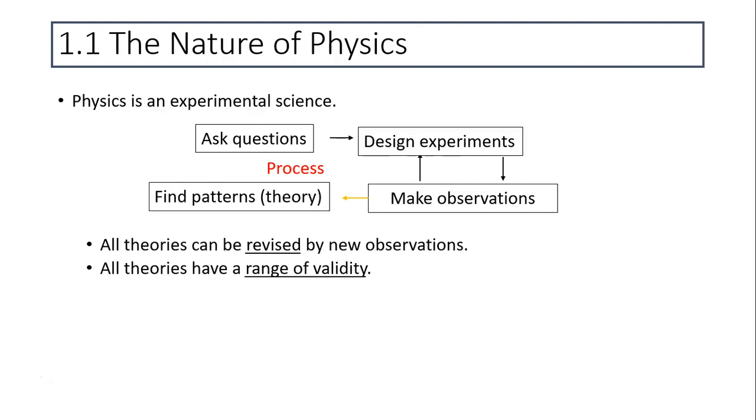Physics is experimental science. That means we use scientific method to determine our conclusions. This method starts by asking questions, designing experiments, then making observations. Finally, from this observation we find science. So this is a process.